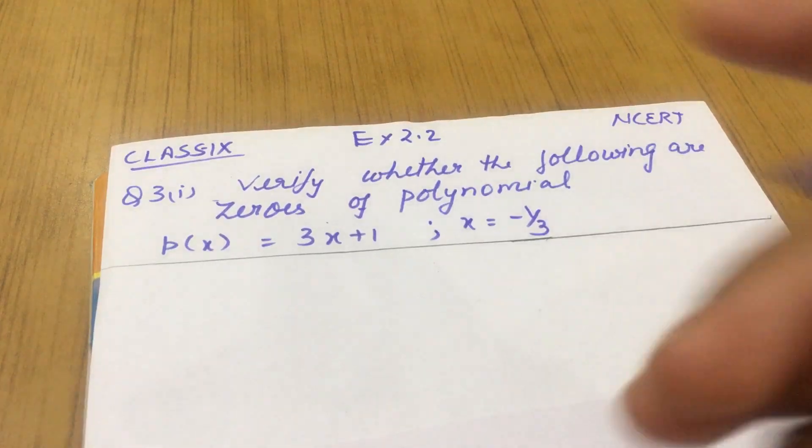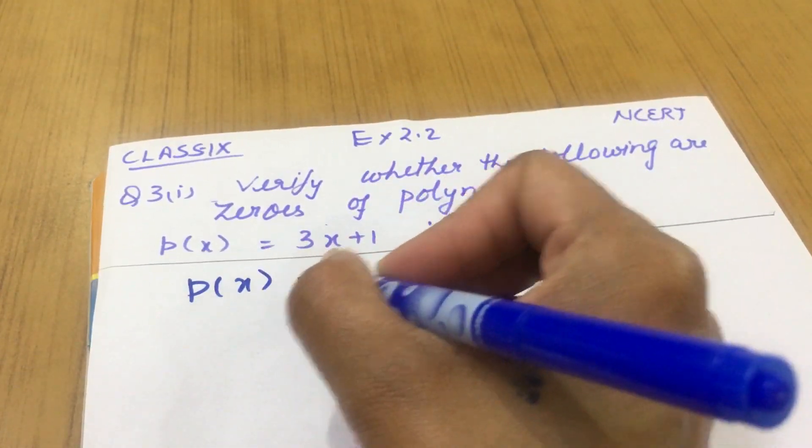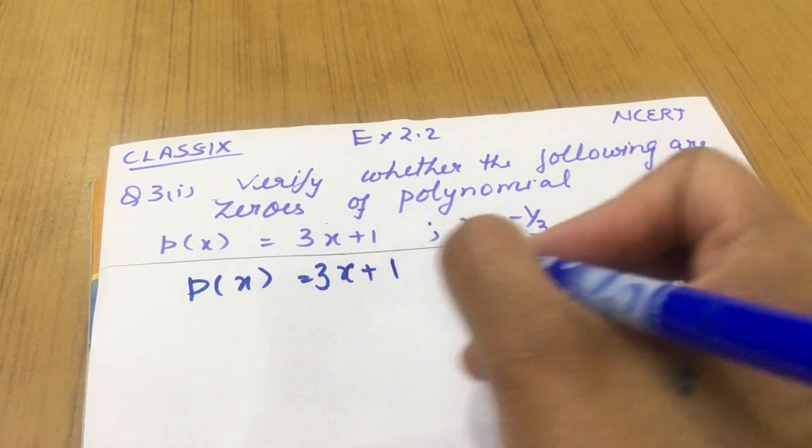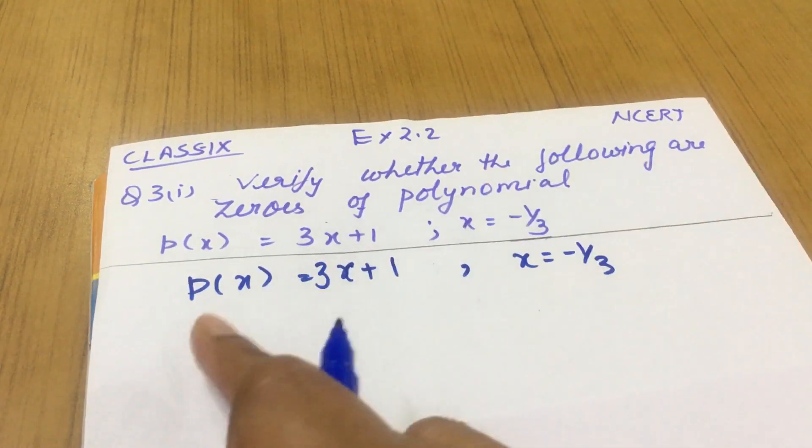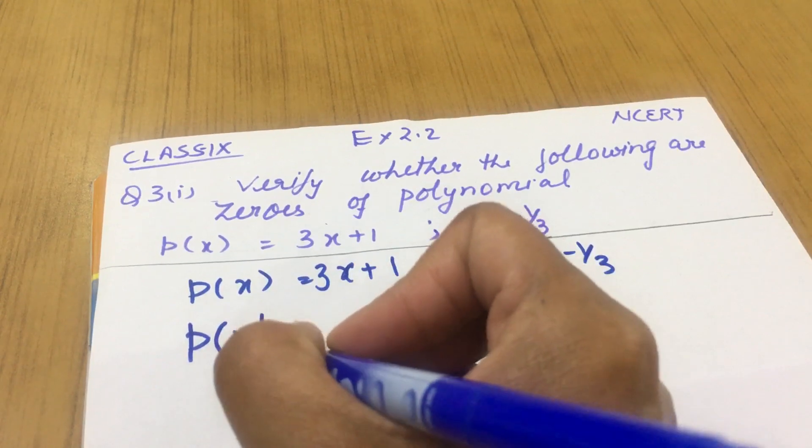Verify means I have to check for 3x plus 1. If the value of x equals minus 1 upon 3 is substituted on left or right side, will my answer be zero?